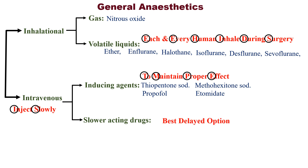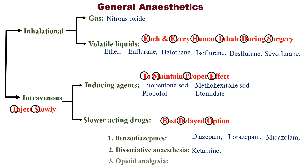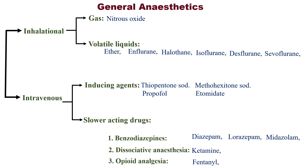Slower acting means delayed action. For slower acting drugs, remember the mnemonic: 'Best delayed option.' B for Benzodiazepines — examples: Diazepam, Lorazepam, etc. D for Dissociative anesthesia — example: Ketamine. O for Opioid analgesia — example: Fentanyl.